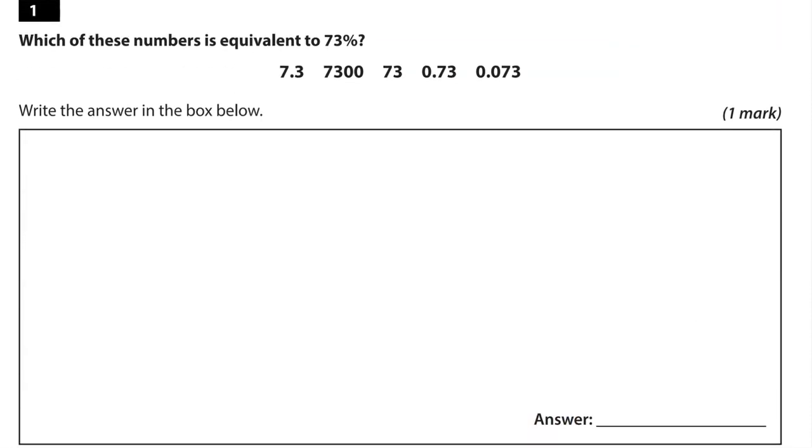Which of these numbers is equivalent to 73%? So 73%, percent means out of 100. So this is 73 out of 100, just like 73 pence in a pound, because there are 100 pence in a pound. So that's going to look like 0.73. It's also like dividing 73 by 100. So that's this one here.